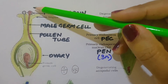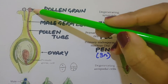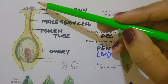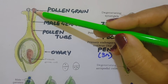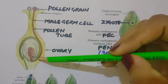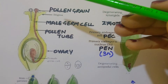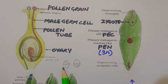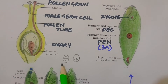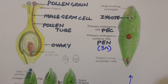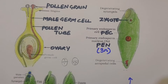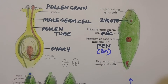Following compatible pollination, the pollen grain germinates on the stigma to produce a pollen tube through one of the germ pores. The contents of the pollen grain move into the pollen tube. The pollen tube grows through the tissue of the stigma and style and reaches the ovary. In some plants, pollen grains are shed at the two-cell stage — vegetative and generative cell. In such plants, the generative cell divides and forms two male gametes during the growth of the pollen tube. In plants which shed pollen in the three-celled condition, pollen tubes carry the two male gametes from the beginning.